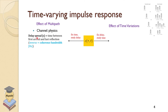The delay spread is the time between the first arrival and the last reflection, and it is the inverse of the coherence bandwidth. Looking at examples of channel responses at different time instances: the delay spread is the time from the first to the last arrival. More spread means energy spreads over time. Delay spread is inversely related to coherence bandwidth — if the channel had infinite bandwidth, you would get exactly one pulse with no spread.